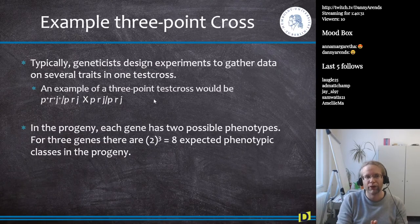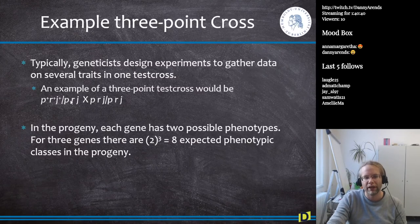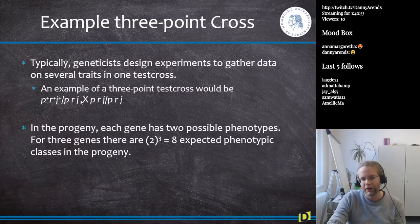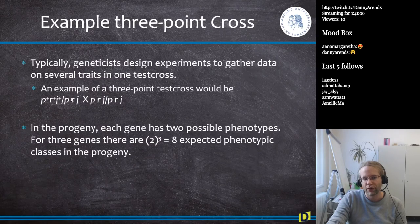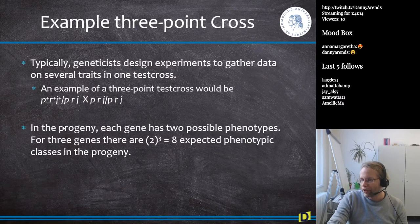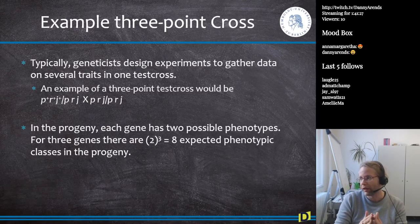Typically, geneticists design experiments to gather data on several traits in one test cross. An example of a three-point cross uses an individual that is wild-type P, wild-type R, wild-type J — crossed with an individual having another allele of P, another allele of R, and another allele of J. This second individual is homozygous for the mutant alleles. In the progeny, each gene has two possible phenotypes, and for three genes there are 2³ = 8 different expected phenotypic classes — if they are not too heavily linked.